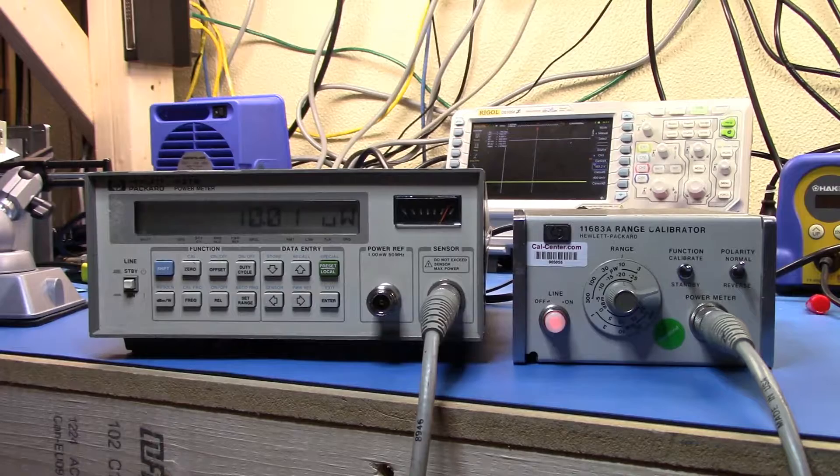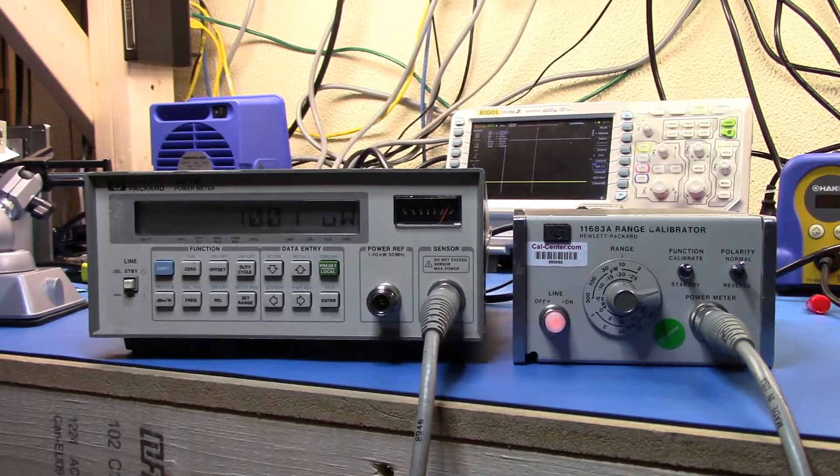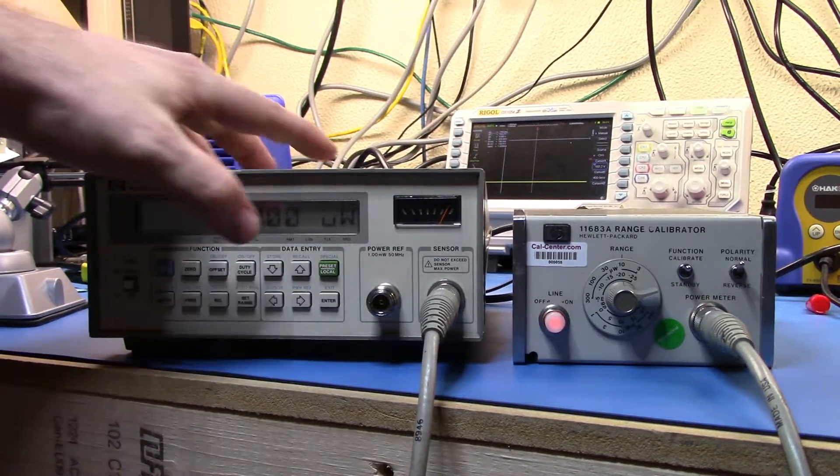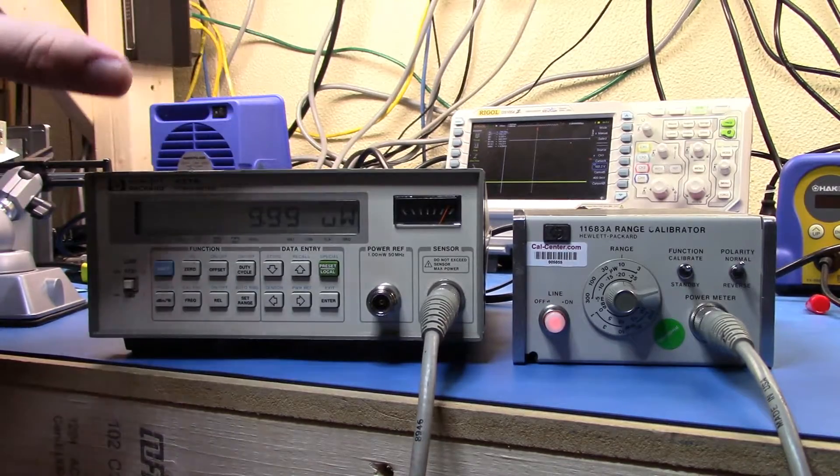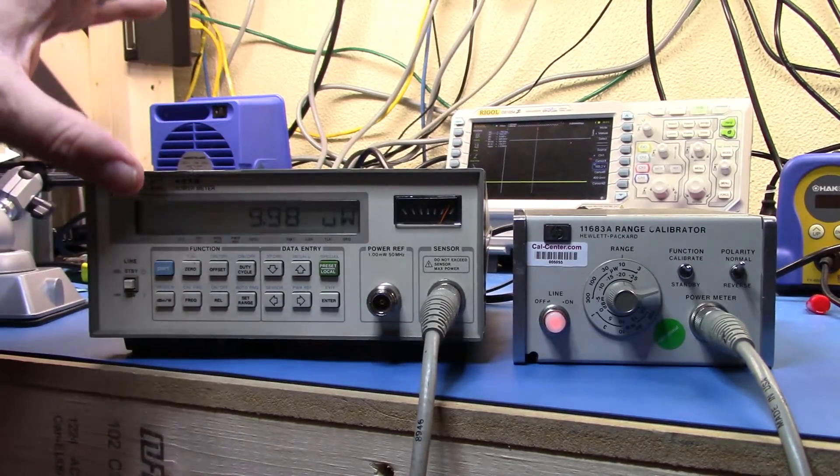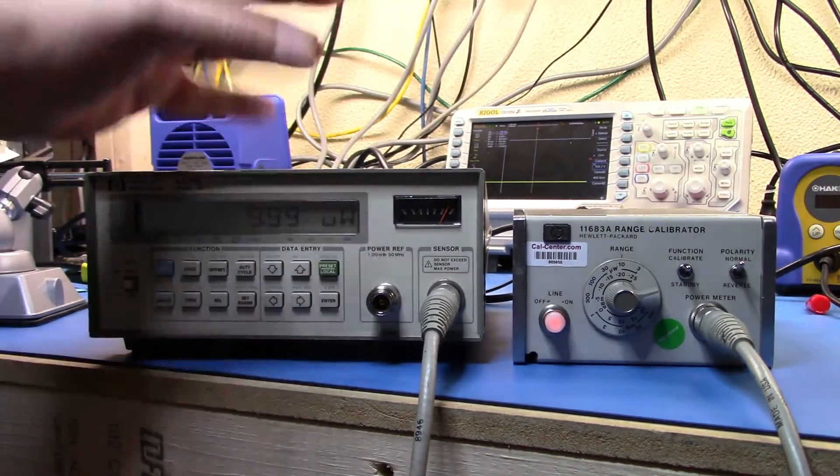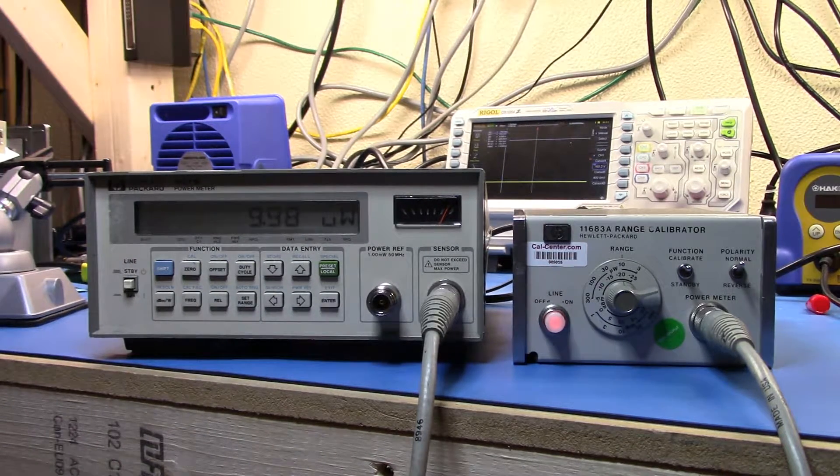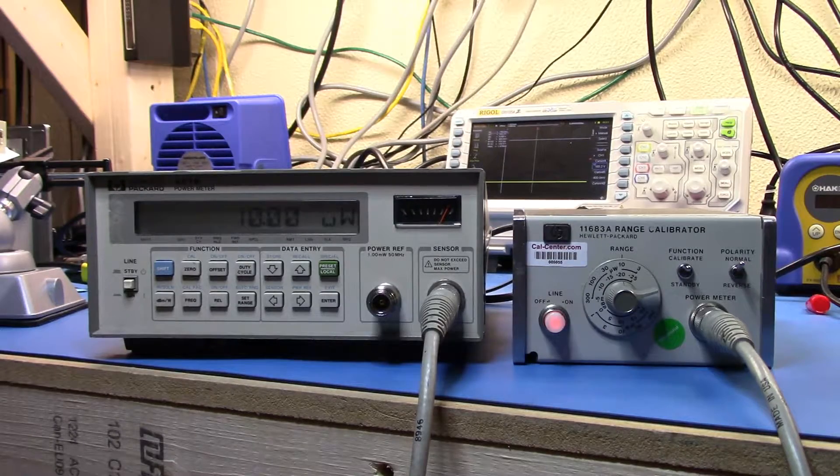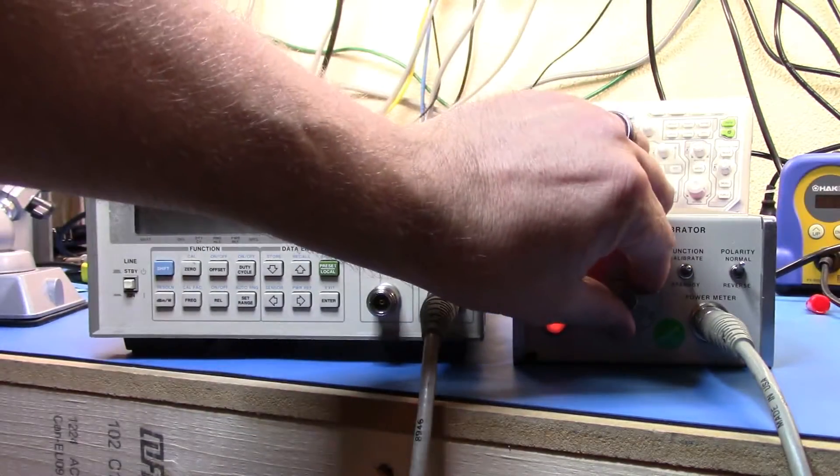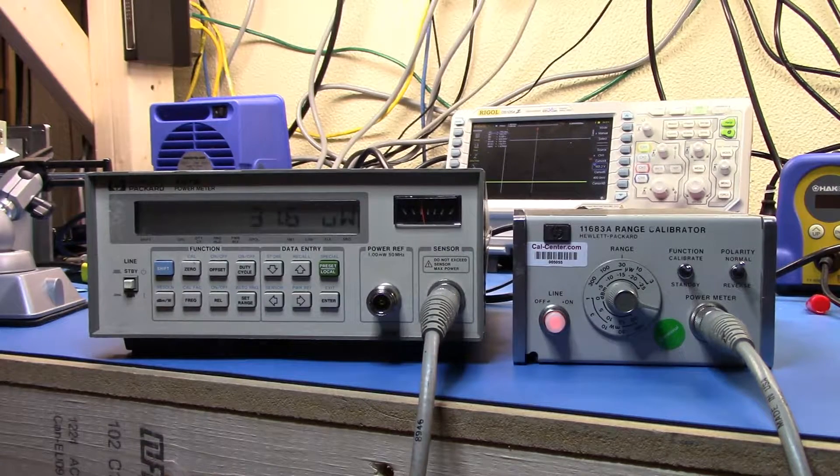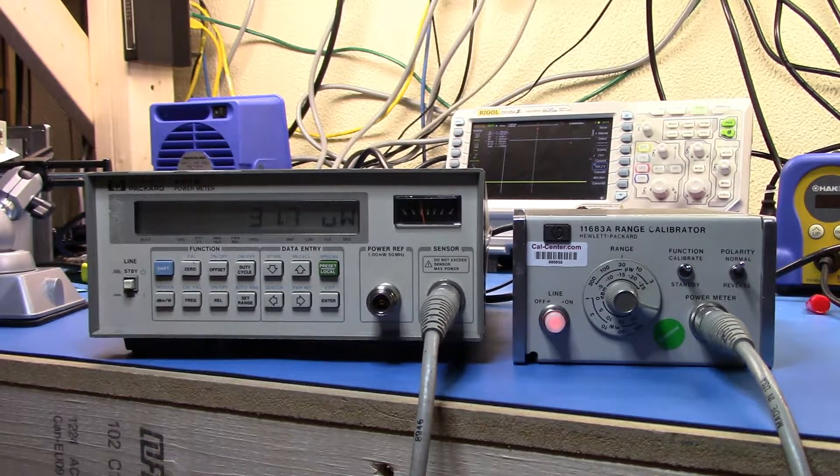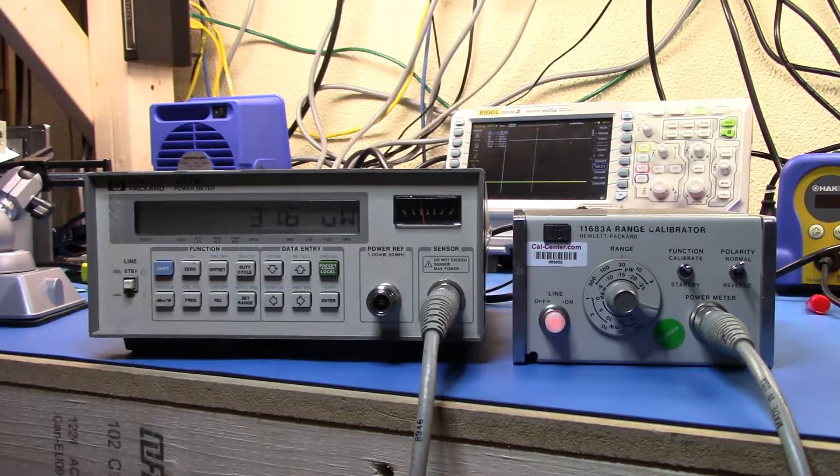Now we don't need to do this in dBm because basically it's the same circuitry inside the 437 that does the calculation, does the measurement, whether it's dBm or not, it's just the math calculation on the top. So we can do this in the watts region. So that's 9.99. Let's come up to 30 watts there.